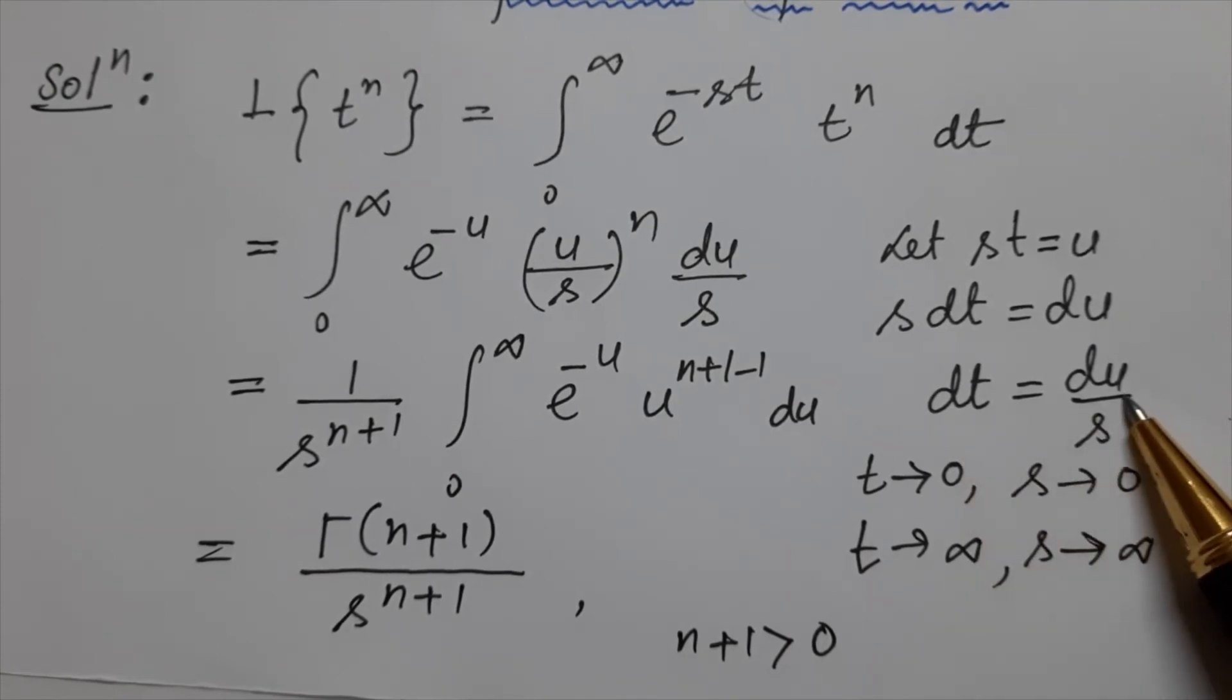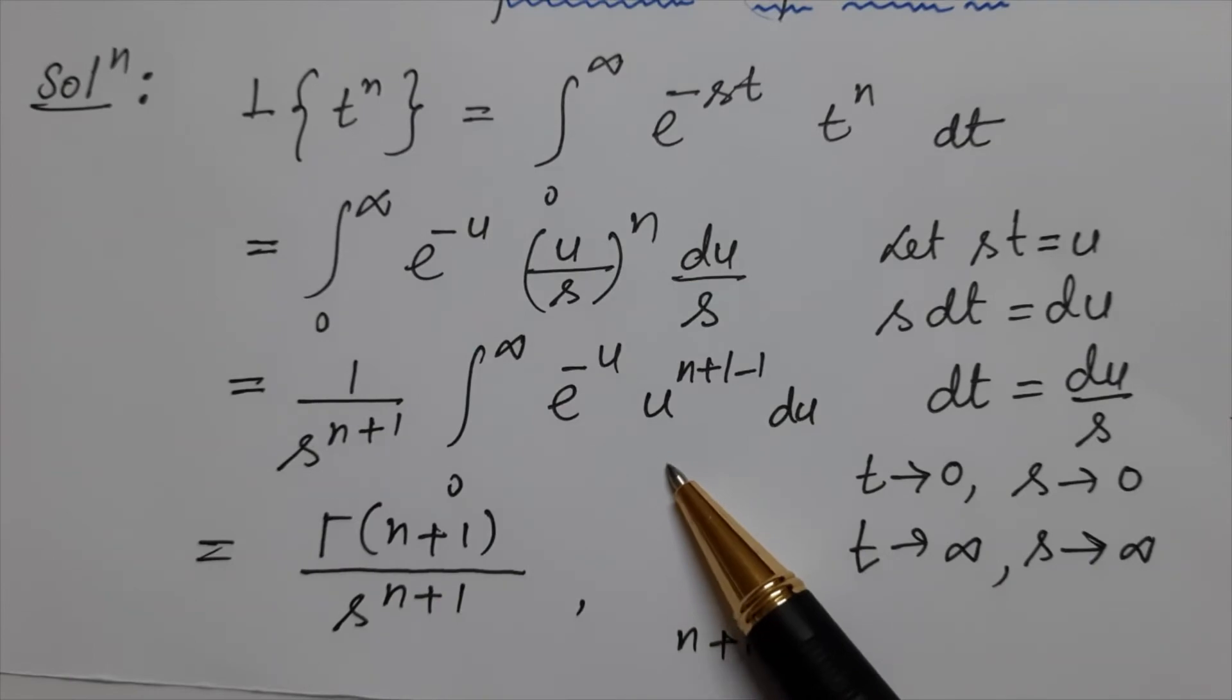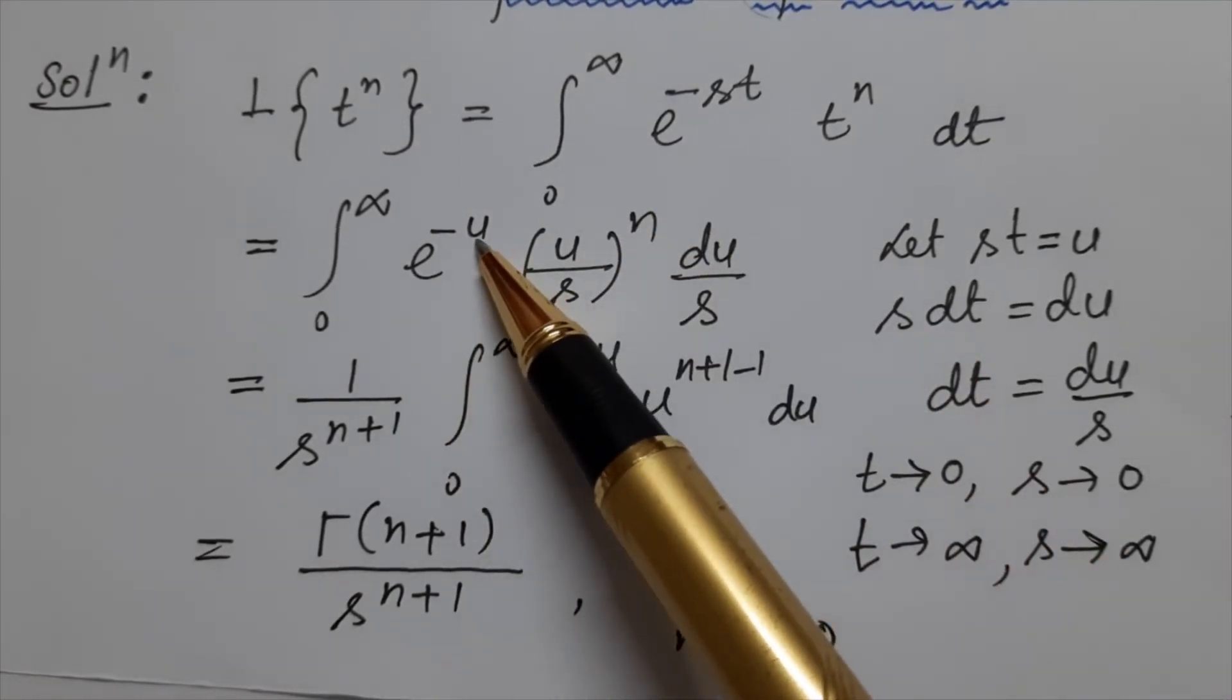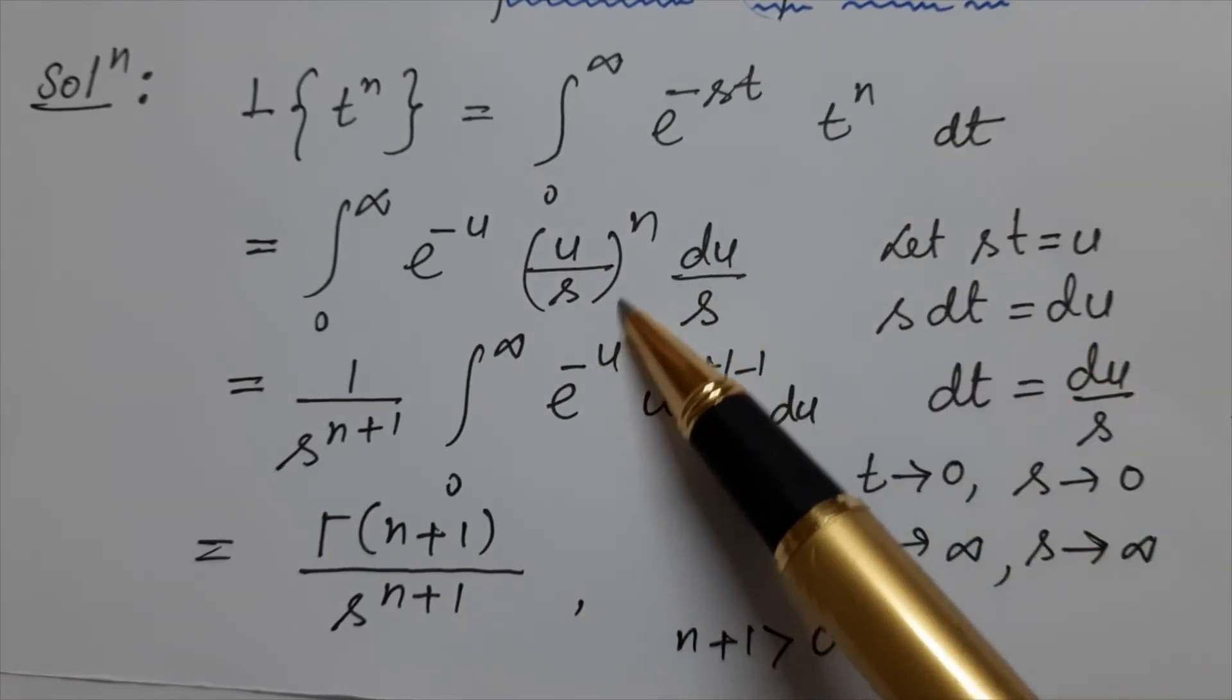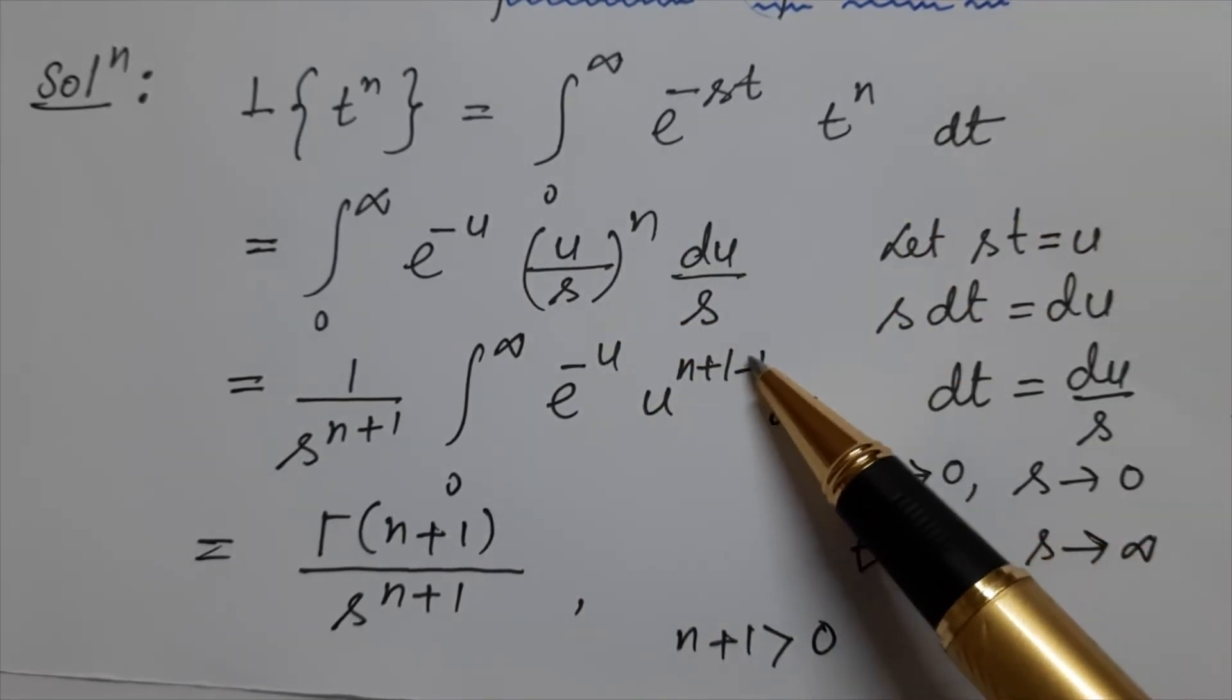dt equals du by s. Now let us substitute here: e power minus st is e power minus u, and t power n is u, and dt is du by s.